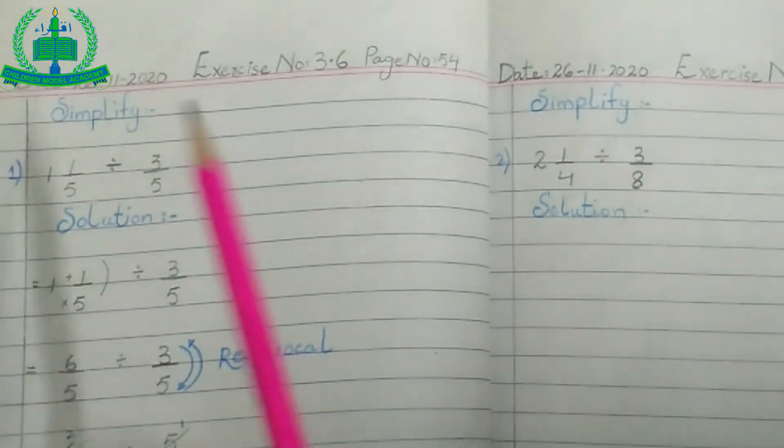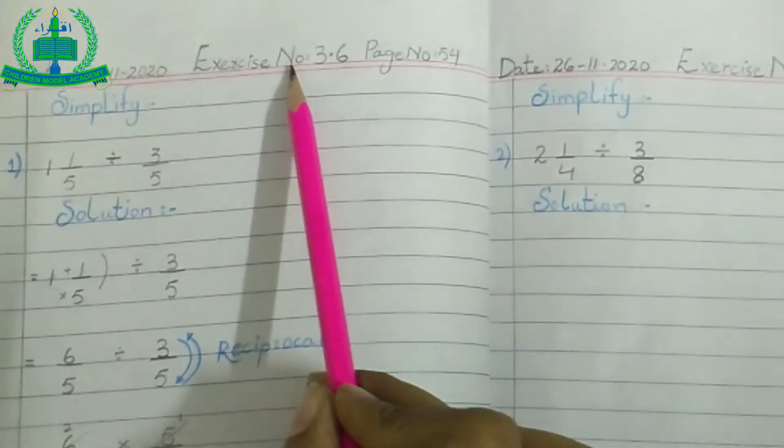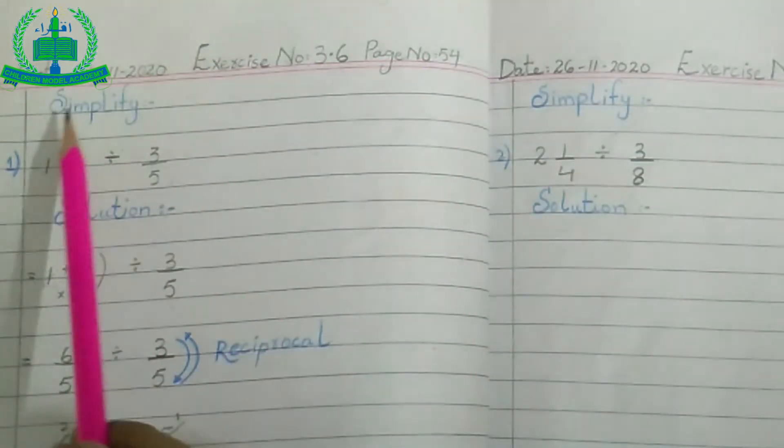Now open your math homework copy, draw a margin line, mention date, exercise number and page number. Write simplify.